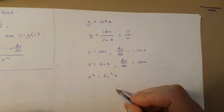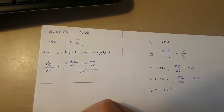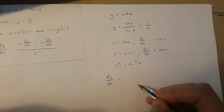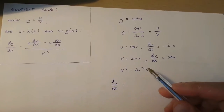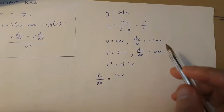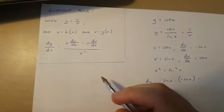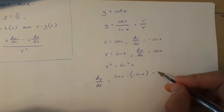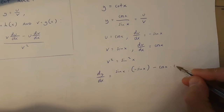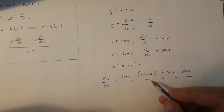Now with this information, I can find out what dy over dx is using the quotient rule. So dy over dx is going to be equal to v, which is sin x, times du over dx, which is minus sin x, minus u, which is cos x, times dv over dx, which is cos x, over v squared, and v squared is sin x squared.